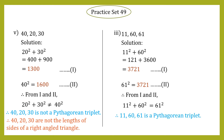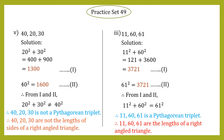Since 11² + 60² = 61², we can say that 11, 60, and 61 is a Pythagorean triplet. This means 11, 60, and 61 follow Pythagoras theorem, so these sides can be the lengths of a right angle triangle. Therefore, 11, 60, 61 are the lengths of a right angle triangle.